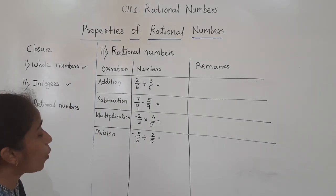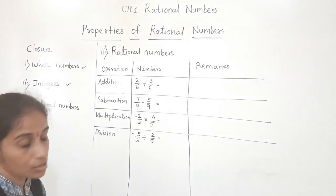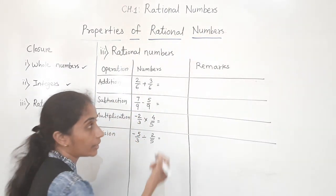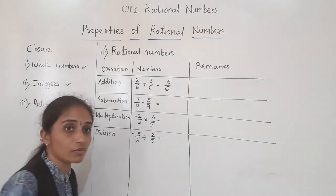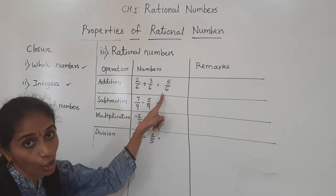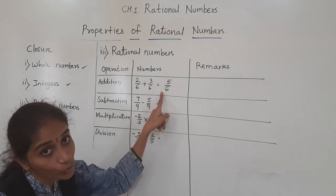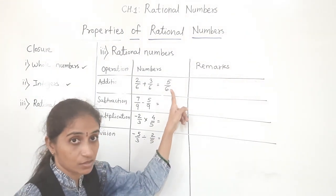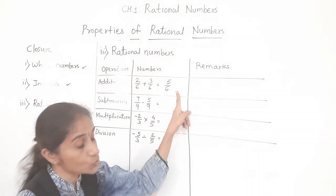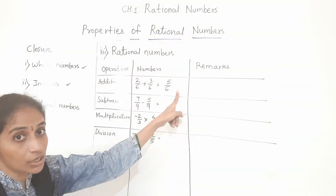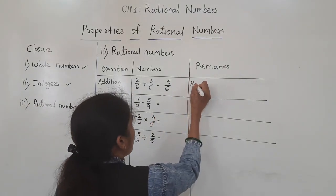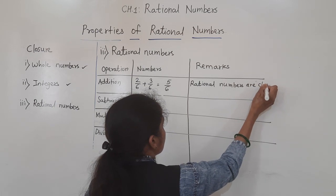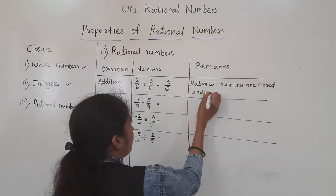For closure property of rational numbers in addition: take 2 upon 6 plus 3 upon 6. The denominators are the same, so we add the numerators directly: 2 plus 3 equals 5, giving 5 upon 6. Is 5 upon 6 a rational number? Yes — it is written in the form P upon Q where Q is not equal to zero. So rational numbers are closed under addition.